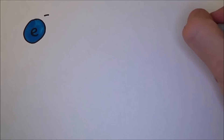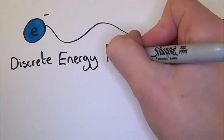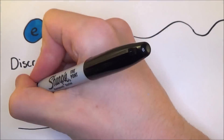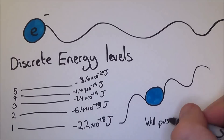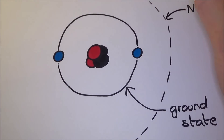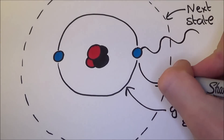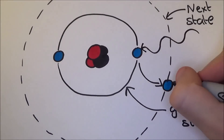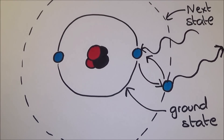An electron will absorb a photon providing that it has the right energy level, and these energy levels are discrete — they have fixed values. If the energy is slightly too high or slightly too low, nothing will happen. The electron is bound to an atom and ideally wants to be as close to the atom as possible — this is called the ground state. For it to move to the next state, it needs to gain energy by absorbing a photon. If the electron wants to move down a state, it will emit a photon to lose energy.